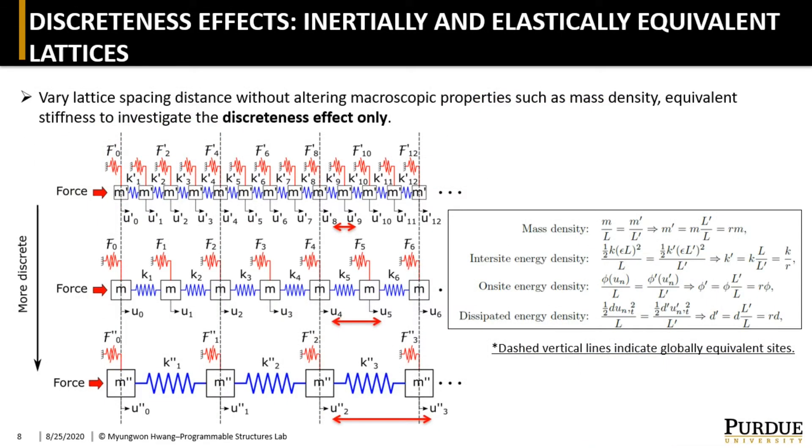We have just observed that transition waves in discrete bistable lattices radiate transducible tails. So now we are further looking for a way to enhance such response by preparing a set of lattices that have different levels of discreteness. To that end, we vary the lattice spacing distances but keep the mass and stiffness densities the same, which effectively changes the stiffness ratio between the inter-site and on-site springs, hence affecting the graduality of the spatial motion. In other words, the discreteness level of the lattice.